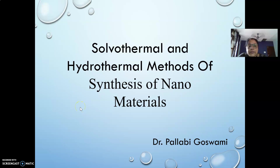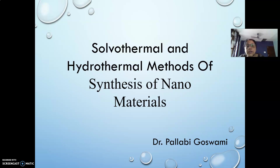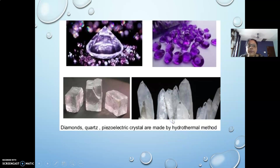Dear students, in the process of studying about the different synthetic routes of preparing nanomaterials, today we will discuss the solvothermal as well as hydrothermal methods. Solvothermal, as the name implies, means heat treatment in the presence of some specific solvent. Hydrothermal means the same heat treatment but in the presence of water as a solvent. Different types of materials are prepared by both processes, but some important ones include diamond, quartz, and piezoelectric crystals, which are made by hydrothermal methods.